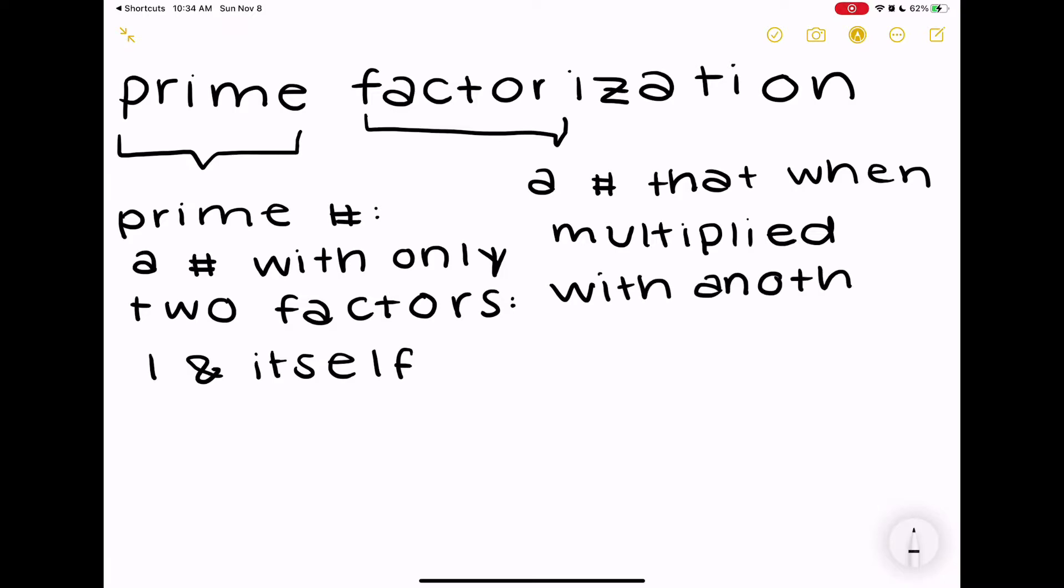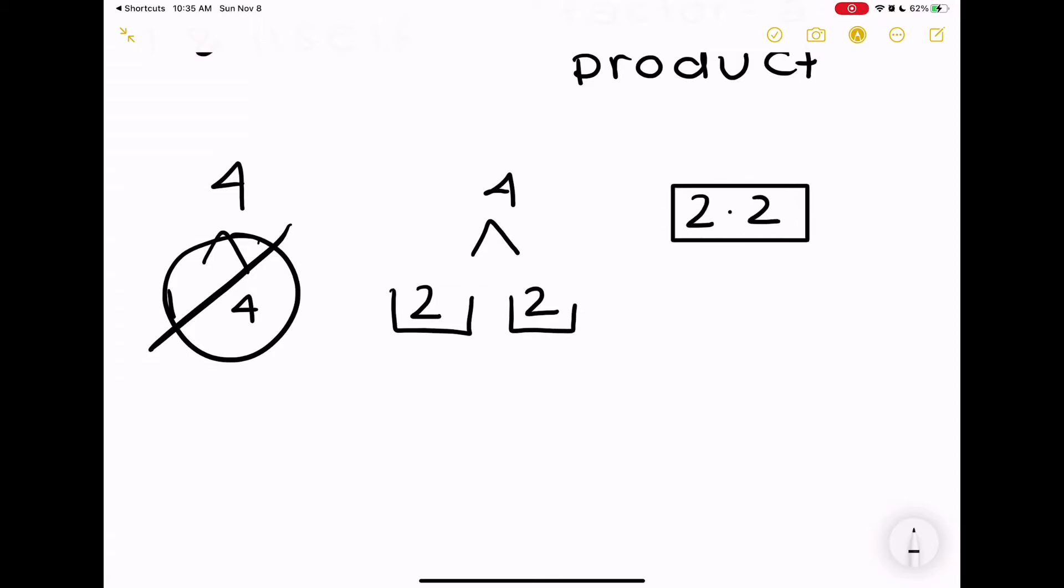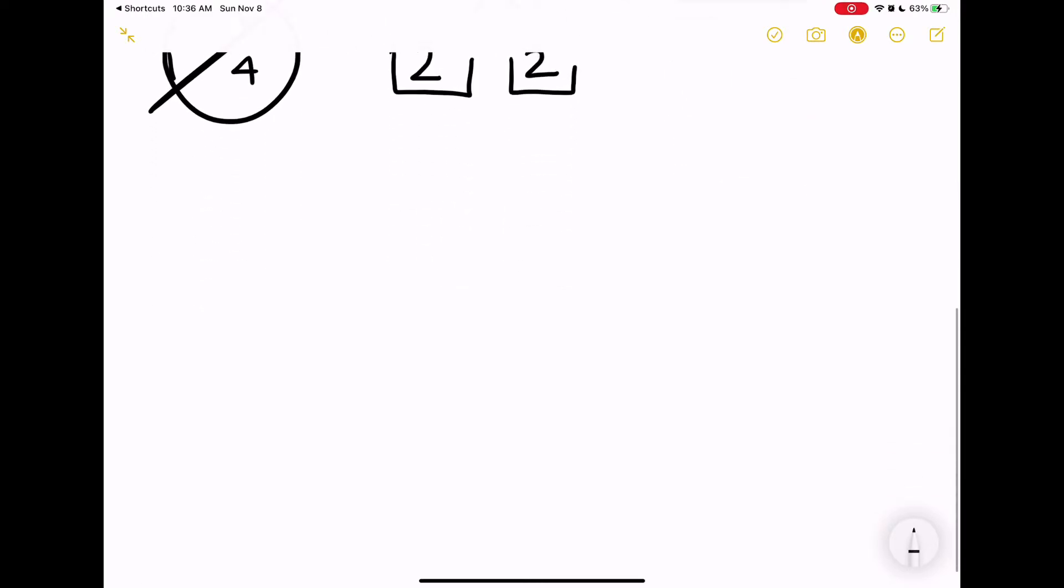A prime number only has two factors. Let's say however other numbers might have more. So let's say we took a number like 4 - well 4 actually has multiple factors. It has 1 and itself, but it also has 2 times 2. So let's say we were asked to prime factorize 4. We are not going to write 1 and 4, we're actually going to write 2 and 2, because when we're prime factoring we do not want to write 1 with the number itself. We instead want to write another two numbers, and if not, then we know that's when we're going to stop.